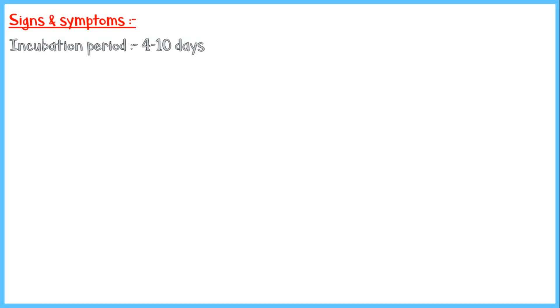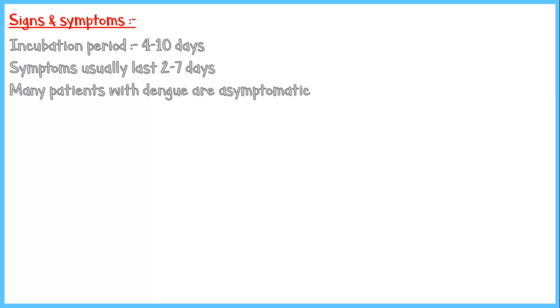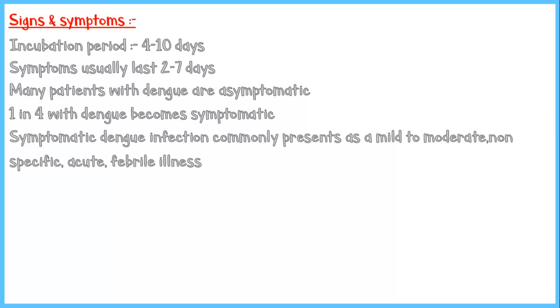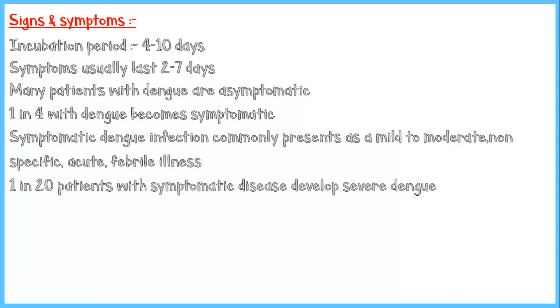The incubation period of the virus is about 4 to 10 days on average. Following onset, symptoms usually last for about 2 to 7 days. Many patients with dengue virus infection are asymptomatic — approximately 1 in 4 people with dengue infection become symptomatic. Symptomatic infection commonly presents as a mild to moderate, non-specific acute febrile illness. About 1 in 20 patients with symptomatic disease develop severe dengue, and most of these patients have a history of a prior dengue infection.